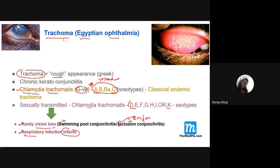If an eye problem is caused by sexually transmitted Chlamydia, it is called inclusion conjunctivitis — especially if it occurs in infants (I for inclusion, I for infants). If it occurs in adults, it is called swimming pool conjunctivitis. The D to K serotypes are linked with sexually transmitted Chlamydia trachomatis, whereas A, B, and C are linked with ocular trachoma. The L serotypes (L1, L2, L3) cause lymphogranuloma venereum, involving genital tract infection.